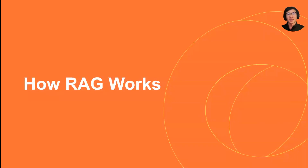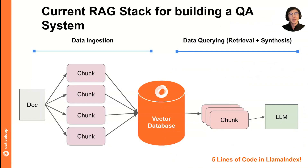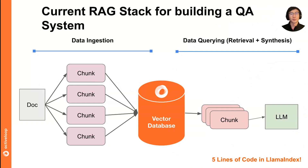That's an overview of LLM Index. Now let's dive a little bit into how RAG works, at least the basic stack — what exactly are the components that are happening? Here's a basic stack for building a question answering system over your unstructured data. For the sake of example, let's say it's just a bunch of PDFs. This consists of two components: data ingestion, and data querying, which is retrieval and synthesis. You can basically do all of this — at least the basic stuff — in five lines of code in LLM Index.